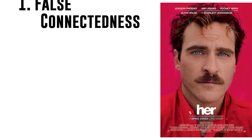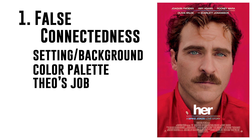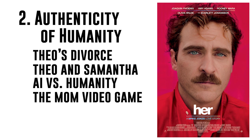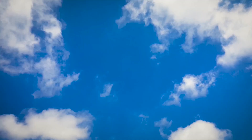To break this movie down we're gonna use two themes. One, false connectedness, where we'll discuss the setting and background, the color palette, Theodore's job, the sex hotline, and the disrespectful video game character. And two, authenticity of humanity, where we'll discuss Theodore's divorce, Theodore and Samantha's relationship, AI compared to humanity, the mom video game, Theodore's letters, and the ending with the final monologue and much more.